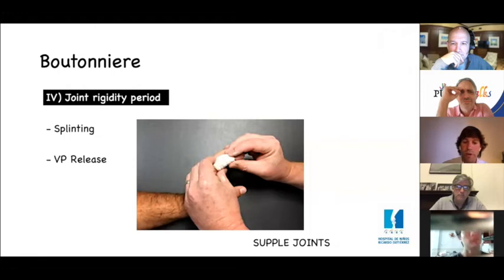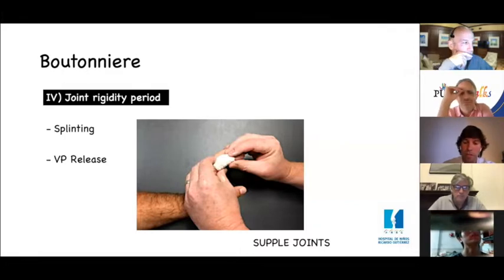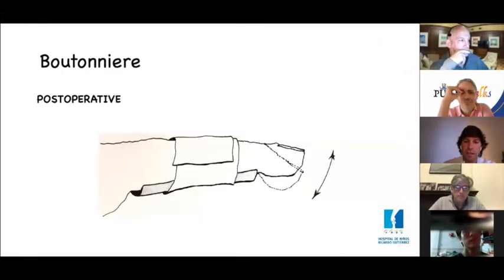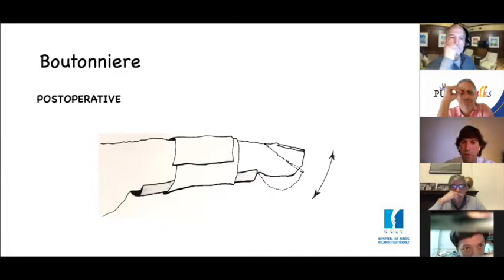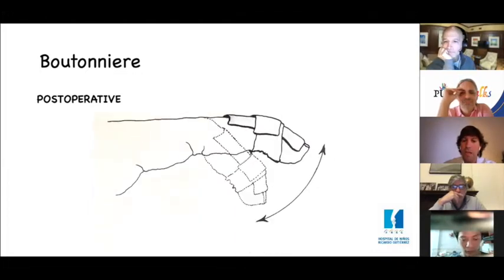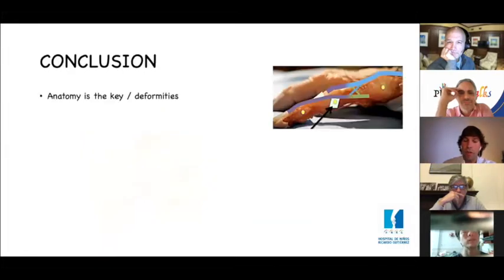For stage 4, we do progressive splinting or even a palmar plate release if therapy alone is insufficient to obtain supple joints, and then rebalance the tendon. In the postoperative period we keep a splint and leave the DIP free to avoid retraction of the oblique retinacular ligament. If the finger starts falling into flexion again in the postoperative, we apply a splint flexing the DIP to put traction on the oblique retinacular ligament.